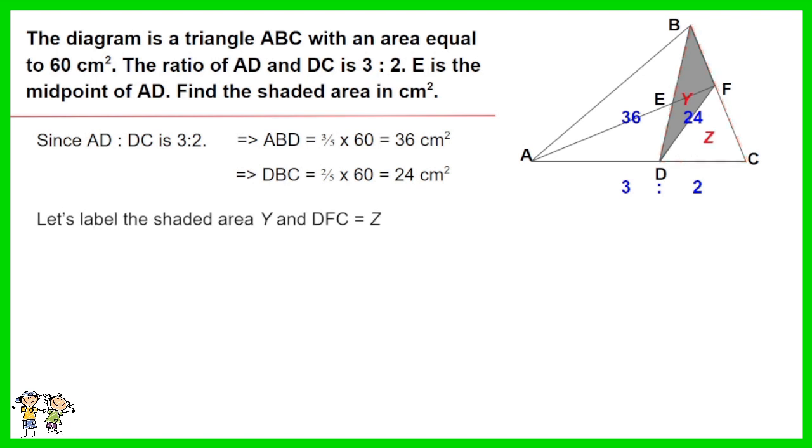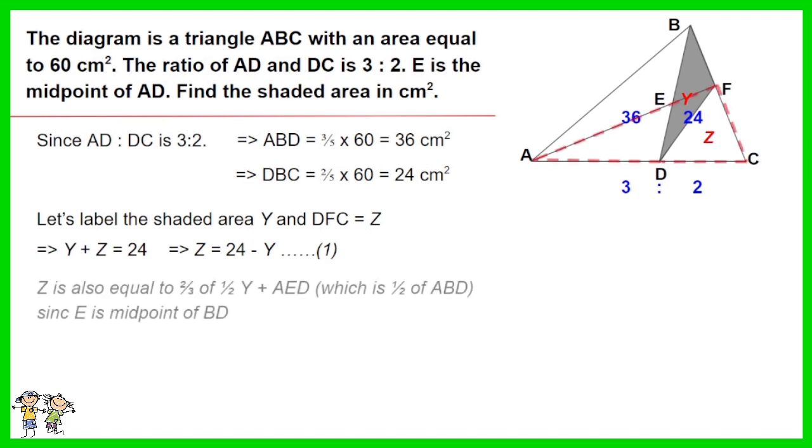Answer for question 2. Let's label the shaded area Y and the area DFC as Z. Y plus Z equals 24, thus Z equals 24 minus Y. This is equation 1. Z also equals two-thirds of Y plus area OED. We also know area OED equals half of ABD since E is the midpoint of AD.